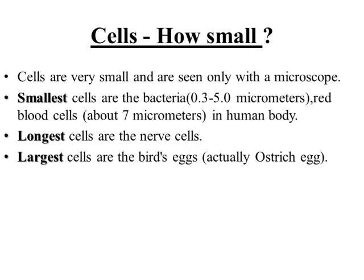Now we are going to study about the size of cells. Cells are very small and cannot be seen with the naked eye; we can only see a cell under a microscope. The smallest cell is PPLO, or pleuro-pneumonia-like organism, which is a bacteria, ranging from 0.3 to 5 micrometers. In the human body, RBC is the smallest cell with a diameter of 7 micrometers. The longest cells are nerve cells, and the largest cells are bird eggs — specifically the ostrich egg.